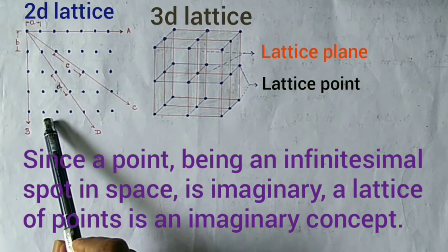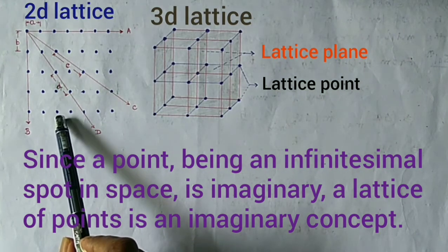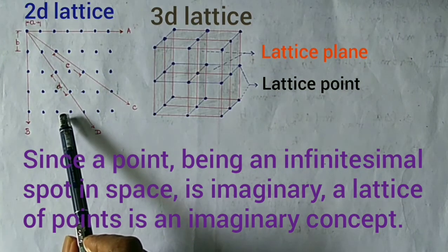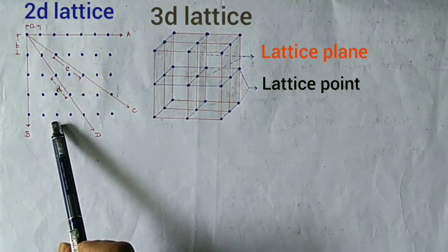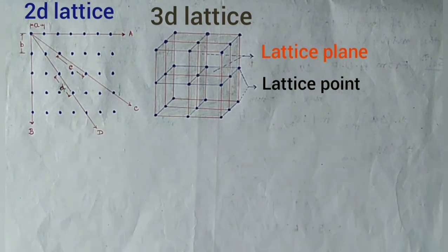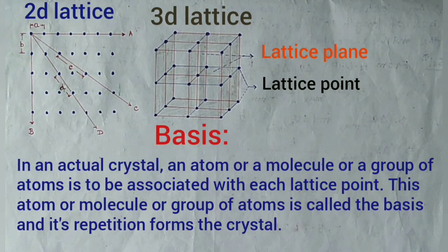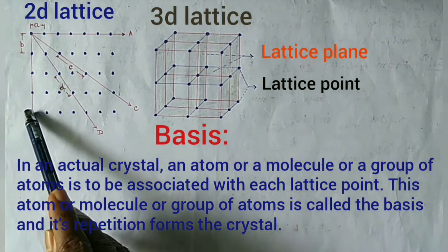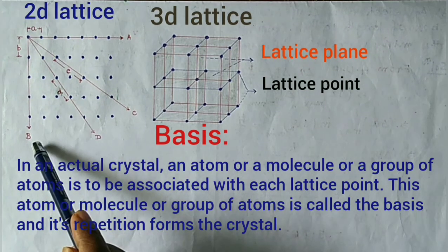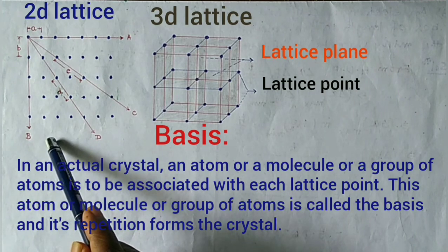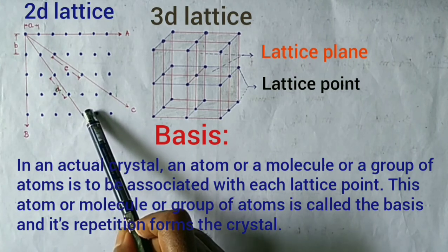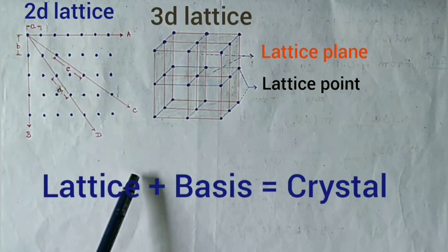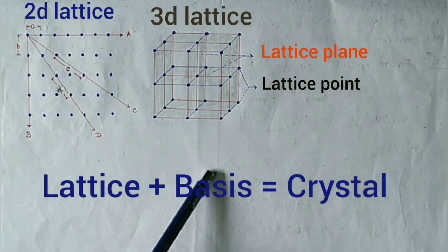Since a point being an infinitesimal spot in space is imaginary, a lattice of points is an imaginary concept. But a crystal is actually a real object. In an actual crystal, an atom, a molecule, or a group of atoms is associated with each lattice point. This atom or molecule or group of atoms is called the basis, and its repetition in space forms the crystal. So: lattice plus basis equals crystal.